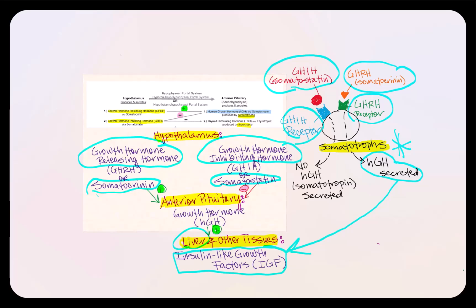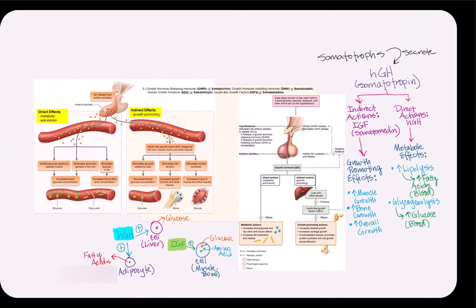Growth hormone is also referred to as somatotropin. Now that we know the somatotropes secrete human growth hormone, also called somatotropin, let's discuss its effects. Somatotropin, or human growth hormone, acts indirectly through IGF, also referred to as somatomedin, and can also act directly.